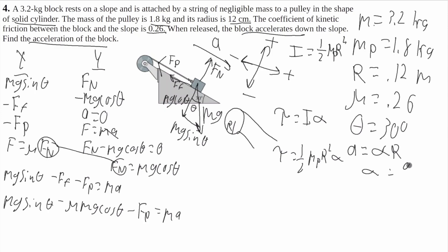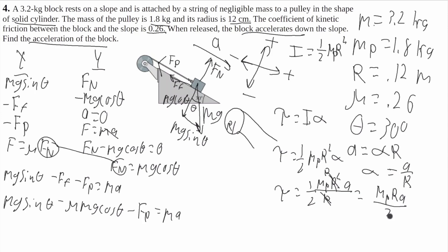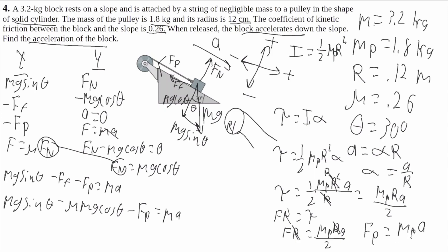Since alpha is equal to A over R, torque is equal to one-half times mass of the pulley times R squared times A over R. This R cancels with that R, so we get mass of the pulley times R times A over 2. Now force times radius is also equal to torque, so force times radius equals mass of the pulley times R times A over 2. This R cancels, so the force of the pulley equals mass of the pulley times the translational acceleration over 2.